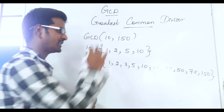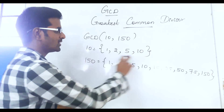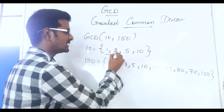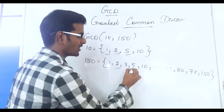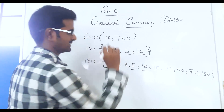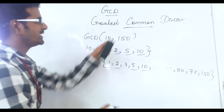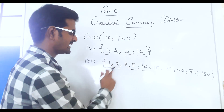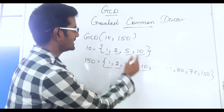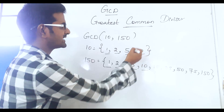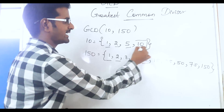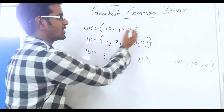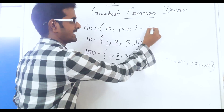So we have lots of divisors for 150. Now we will list out all the common divisors: 1 is common, 2 is common, 5 is common, and 10 is common. So the common divisors are 1, 2, 5, and 10. Now, what is the greatest common divisor? 10 is the greatest common divisor. So the GCD of 10, 150 is equal to 10.